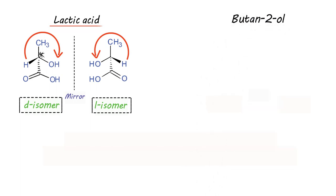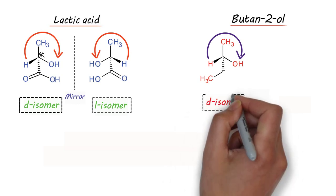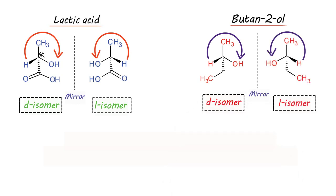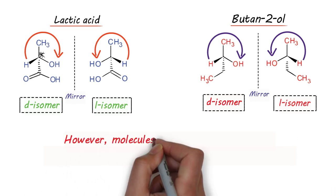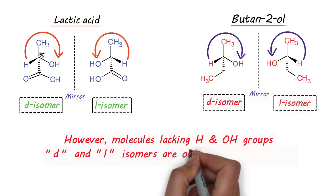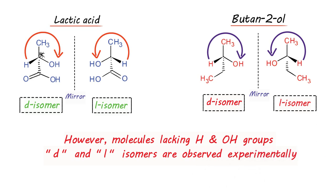In the case of butane-2-ol, moving from hydrogen to hydroxyl through the methyl group — because methyl has a lower molecular weight than the ethyl group shown away from you — it moves clockwise, so it is the D isomer. Its mirror image is the L isomer. However, molecules lacking H and OH groups cannot be predicted as D or L theoretically; we have to determine D and L experimentally using a polarimeter.